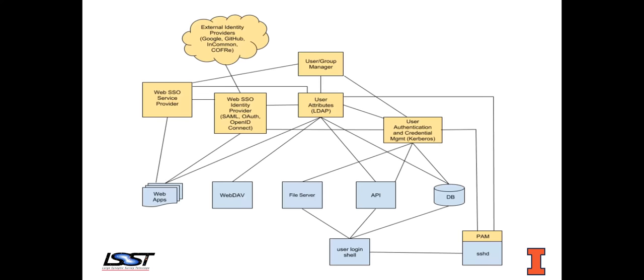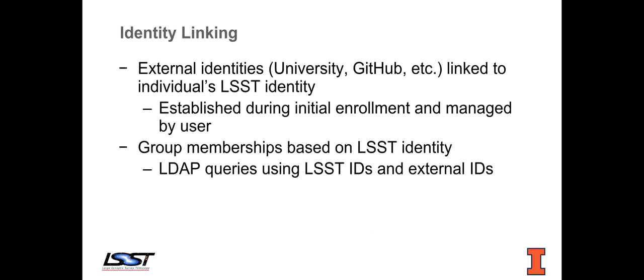To give a high-level architectural view: underneath all the technology we have databases, APIs, file servers, web dev servers, and even login shells that are clients of all this. It's very complex — there are a lot of different technologies that need to integrate with this one single identity management system. A big goal also is allowing linking of external identities to one's LSST identity, managed during initial enrollment by the user. Group memberships are based on the LSST identity, and forming groups and group memberships is really the core of authorization to data and services.